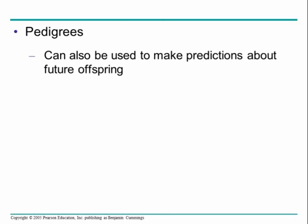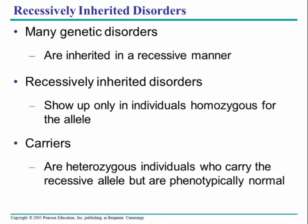We can also use pedigrees to make predictions about future offspring. A genetic counselor, for example, would collect your family history and pedigree and try to make predictions about the likelihood of certain diseases. This is largely done with inherited genetic disorders and is often easiest for recessive alleles. People can be carriers of disease alleles or traits because they can be heterozygous — if the trait or disease is recessive, you can carry it. We call them carriers, which basically means they're heterozygous.